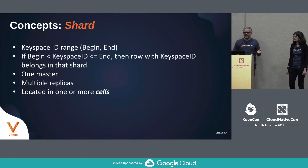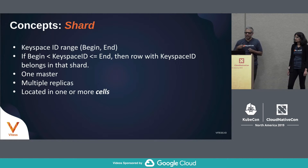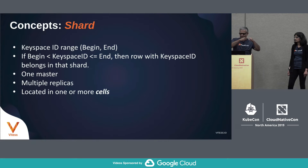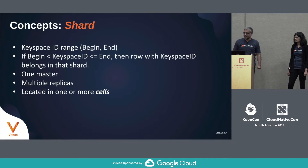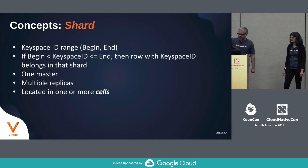A shard has a begin and an end value for keyspace IDs. To figure out whether a particular row belongs in a particular shard, Vitesse evaluates: begin < keyspace ID <= end. A keyspace is a collection of shards where the keyspace ID ranges span the whole keyspace. Each shard has one master and multiple replicas — it's a traditional MySQL cluster. These masters and replicas can be located in one or multiple cells.